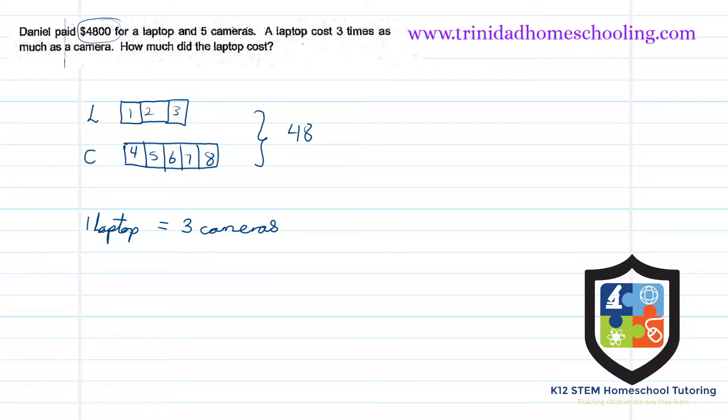Let's find for one of the cameras. We divide by eight. Okay, this will give us a cost of six hundred dollars. So each one of these cameras cost six hundred dollars.